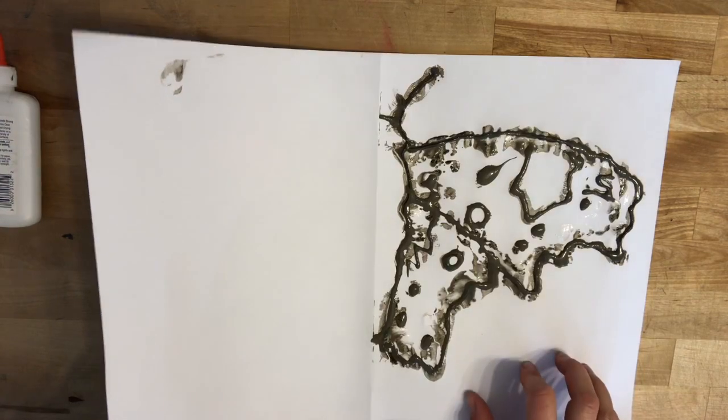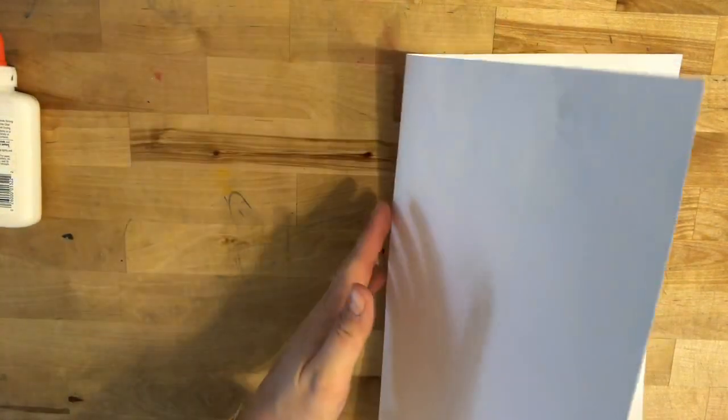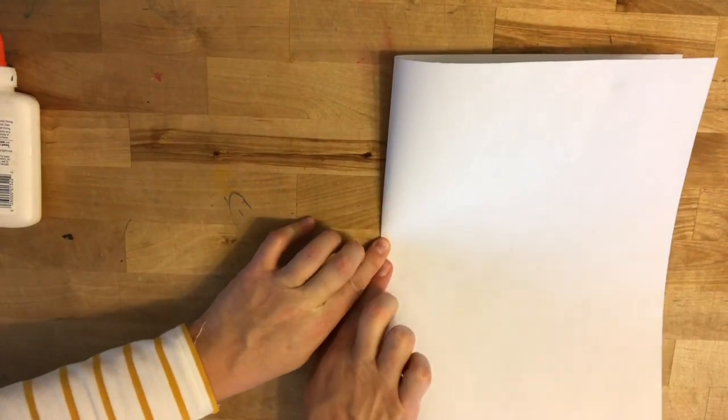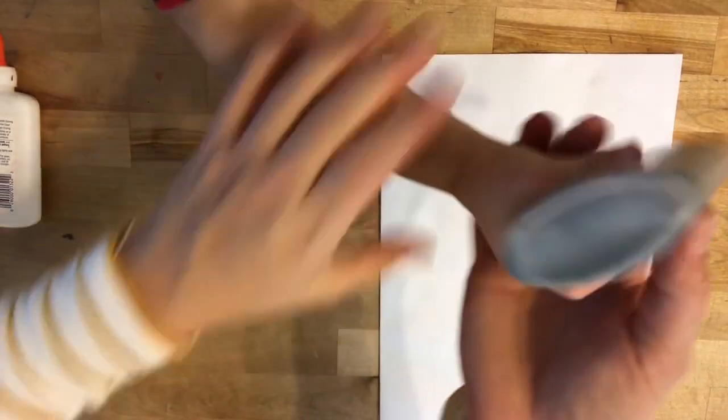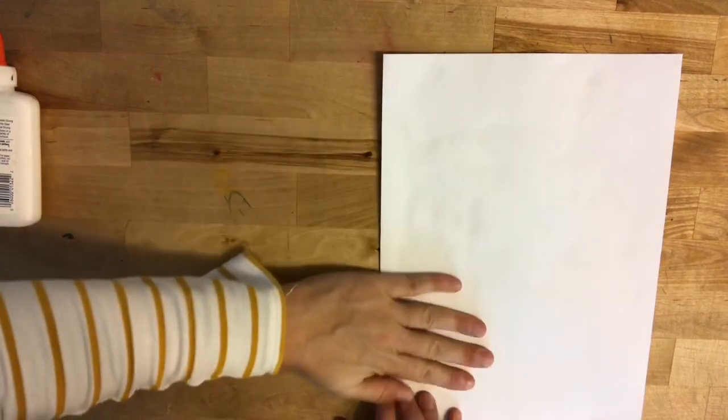And I'm going to very carefully, now that I have half of my butterfly drawn, fold my paper in half. I'm just going to put my fingers on the crease here and rub along that crease.